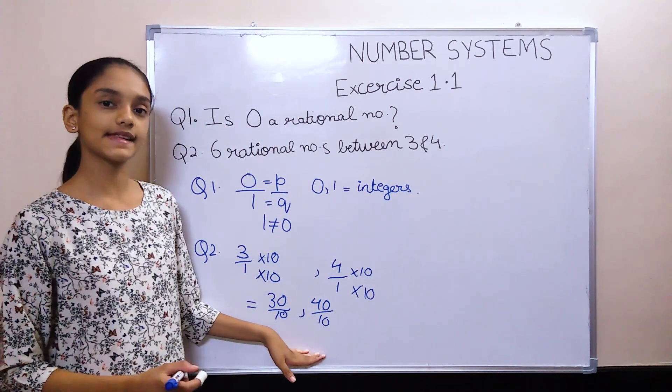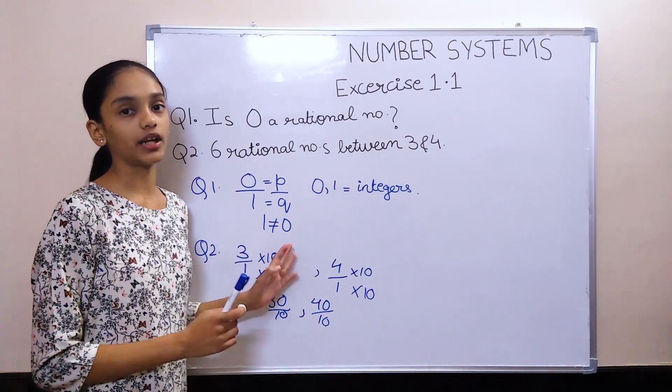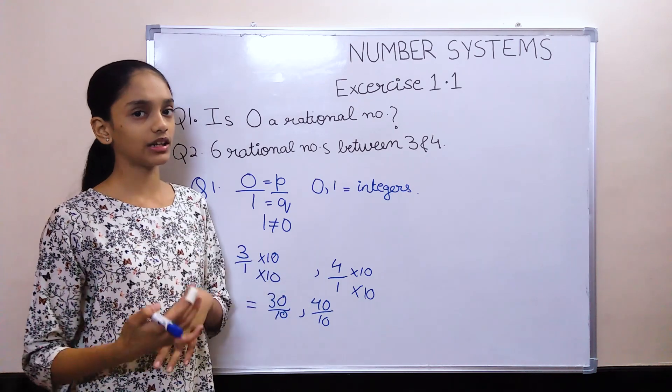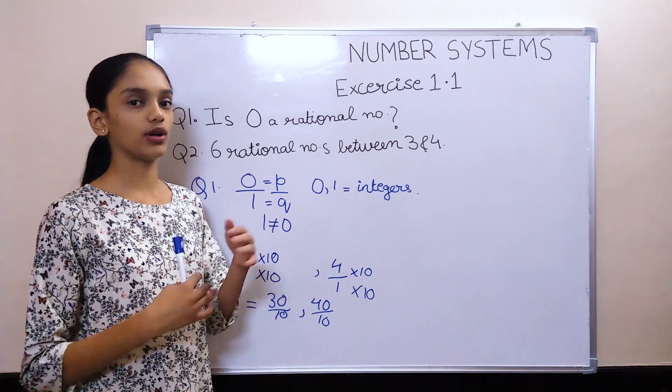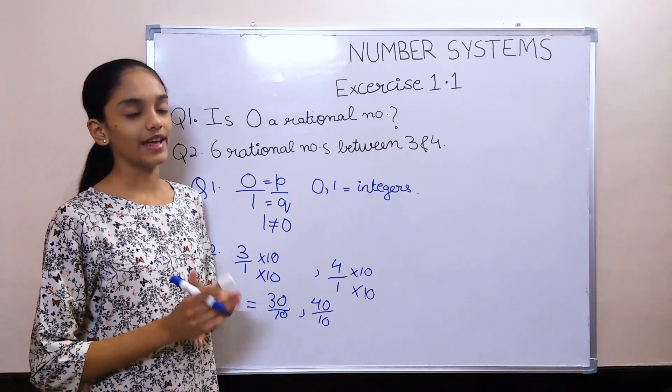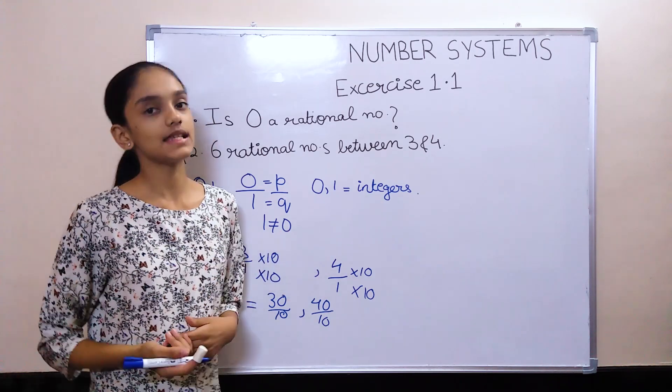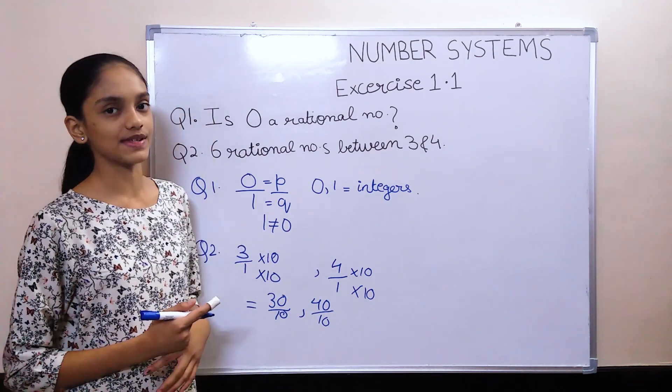Now you can write any 6 numbers between them like 31 upon 10, 32 upon 10, 33 upon 10, 34 upon 10, 35 upon 10, and 36 upon 10. Then just write all the numbers in the simplest form and that would be the answer.